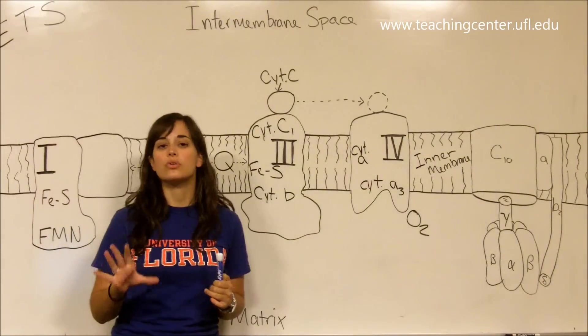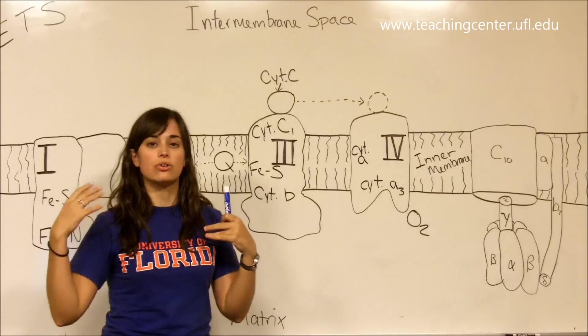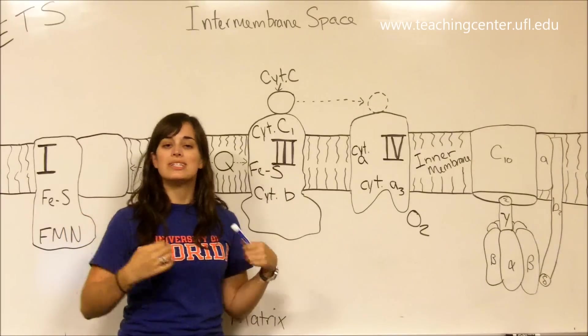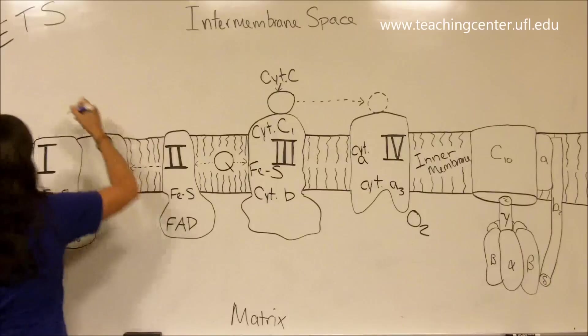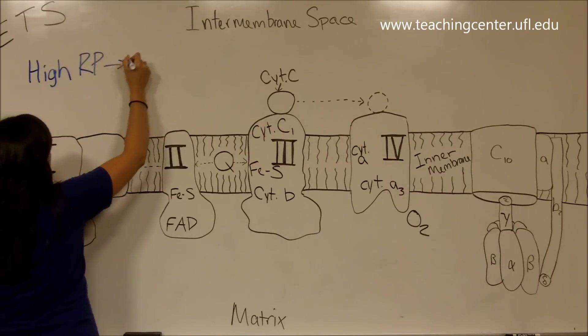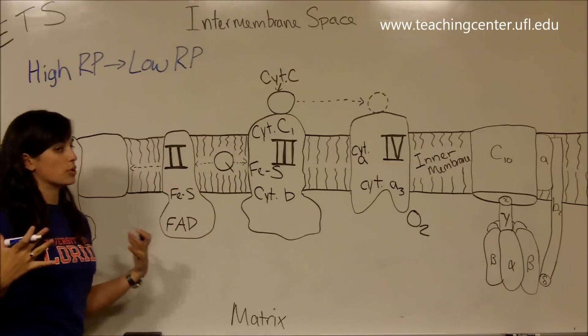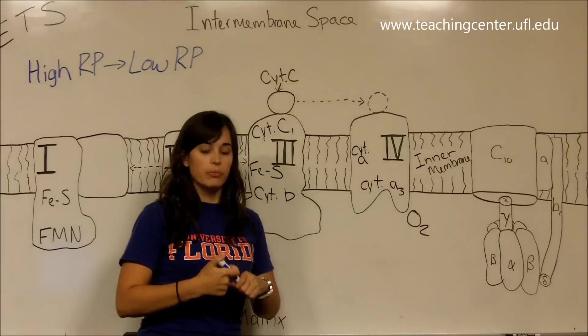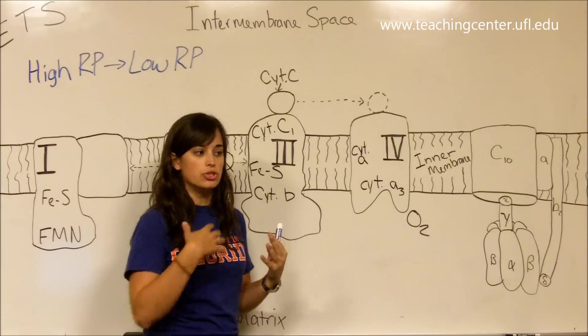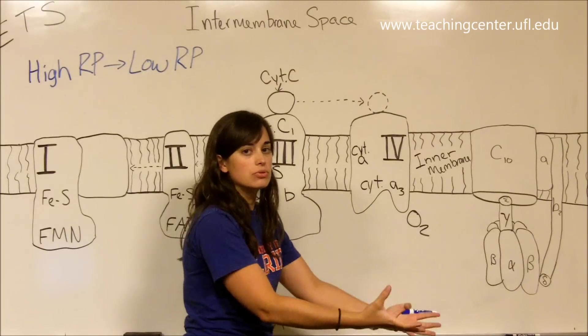First thing you need to remember, sort of the golden rule for your electron transport chain, is that electrons are always going to go from a complex or from an electron carrier with a higher reducing potential to something with a lower reducing potential. So they always move from high reducing potential to low reducing potential. Of course we have to know what reducing potential means.